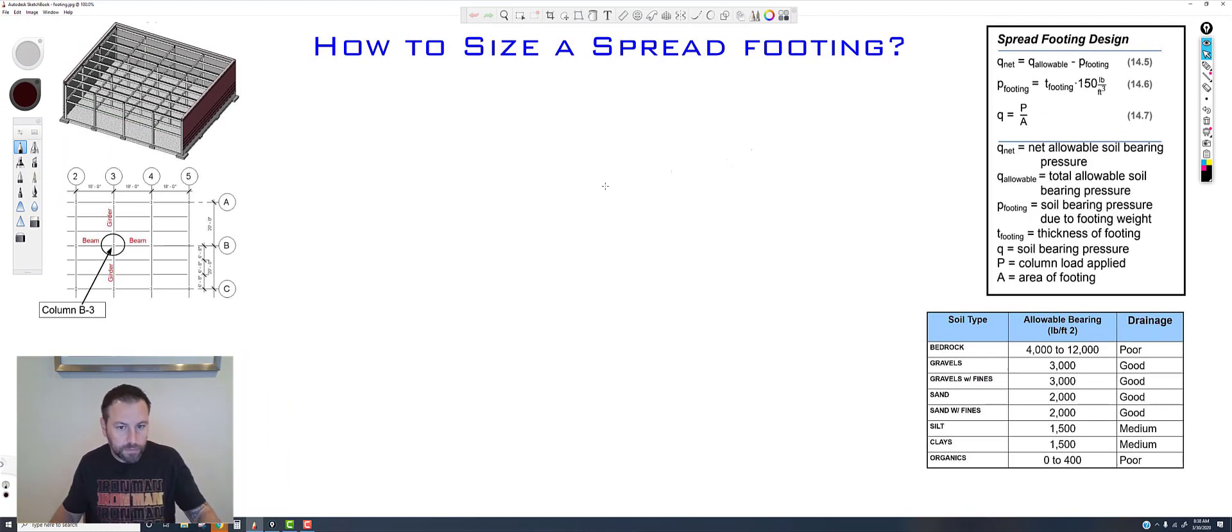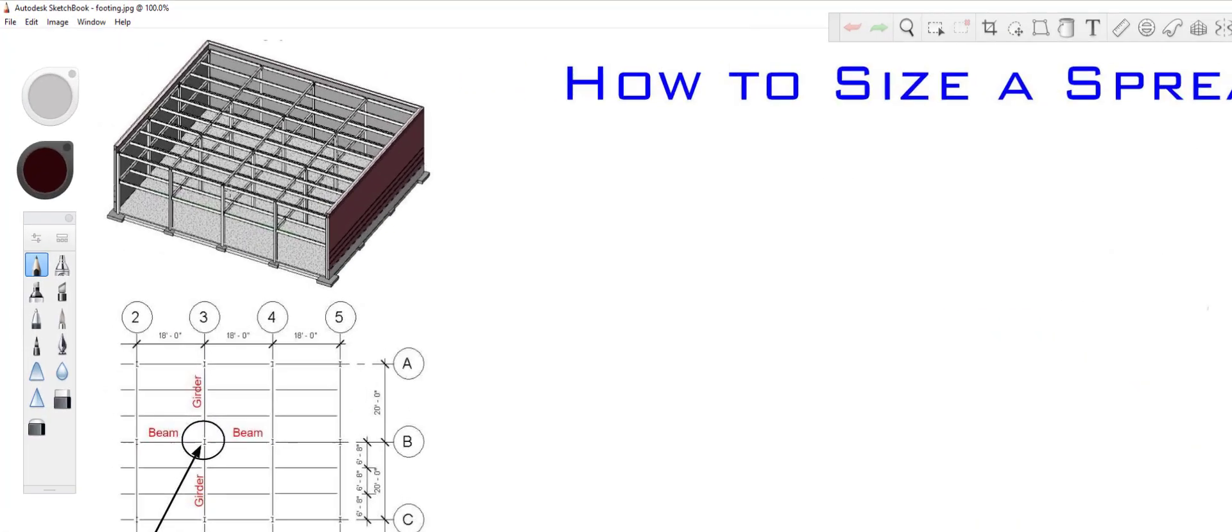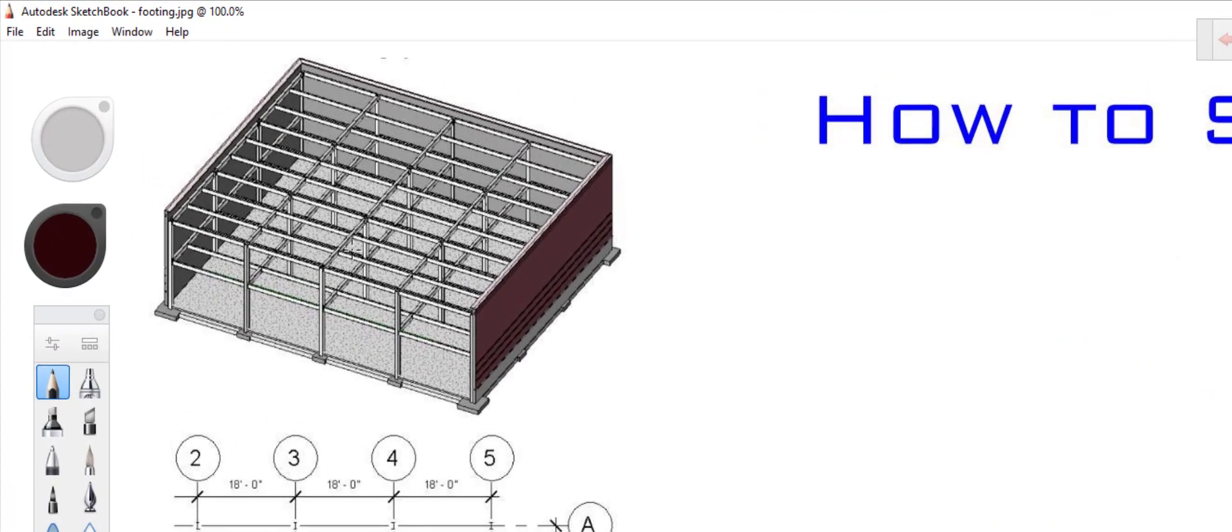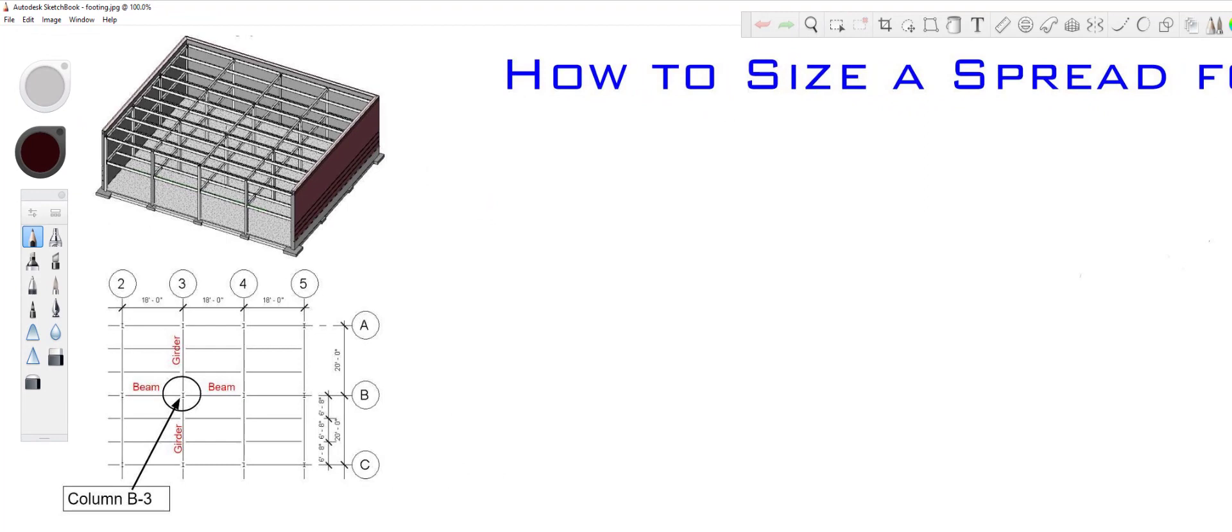Alright, so let's get to this. So we have our keystone library. We could technically use any single one of these interior columns right here for these calculations. They're saying B3, so we're somewhere in this ballpark right around here. So that's where we're at.